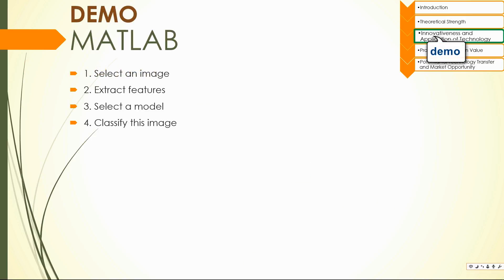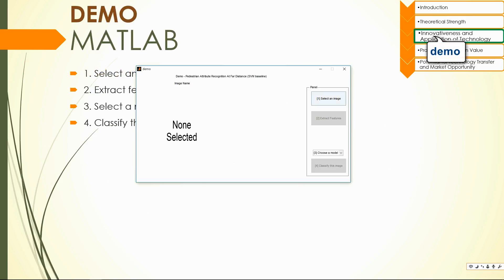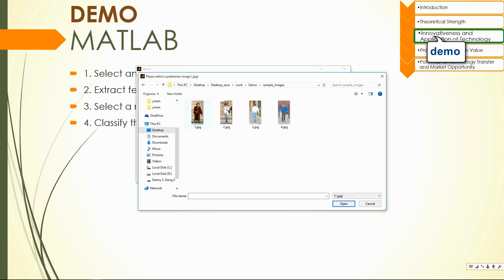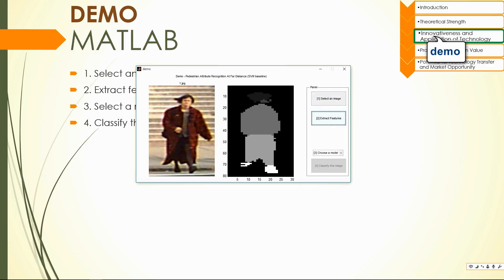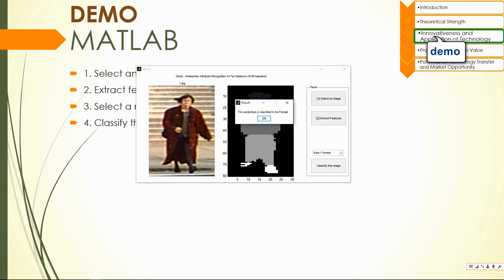Now let's see a demo. We try to simulate the process of getting a pedestrian image from surveillance cameras, then we extract features from this pedestrian image. After that, we choose a model — for example, male-female. Finally, we hit the button to classify this image, and this computer program will do the computation and report to us that this pedestrian is classified to be female.